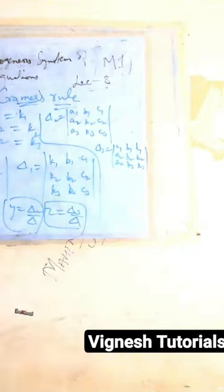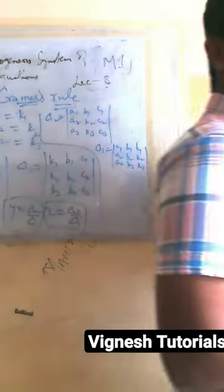...by delta is the value of z. So this is how you form the solutions of this non-homogeneous system.